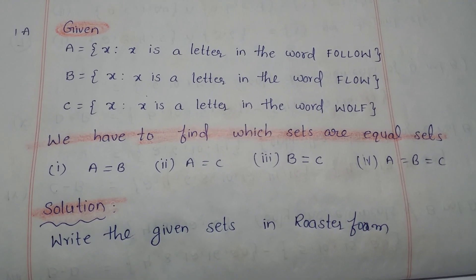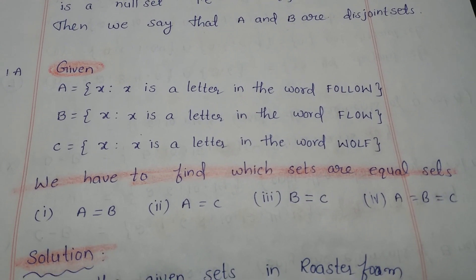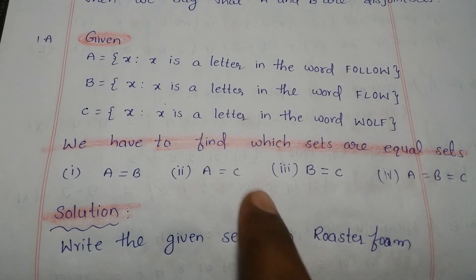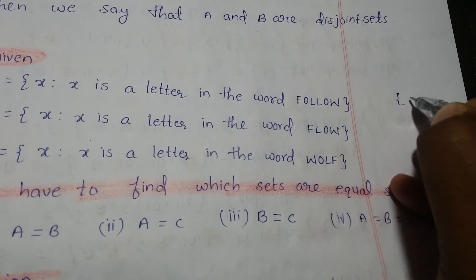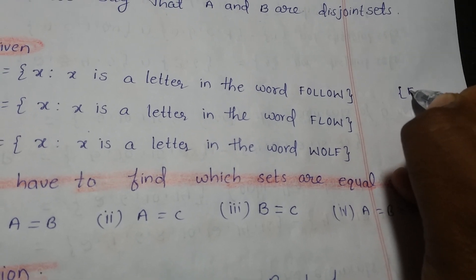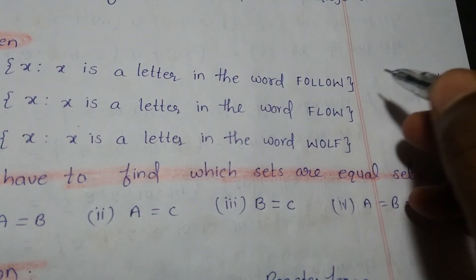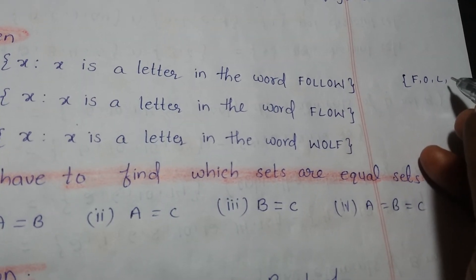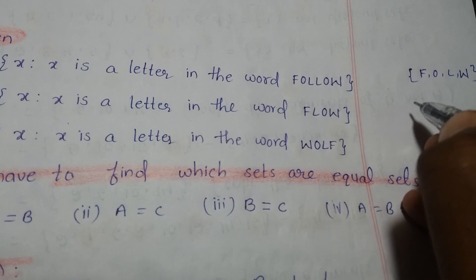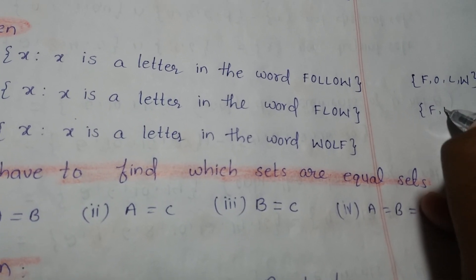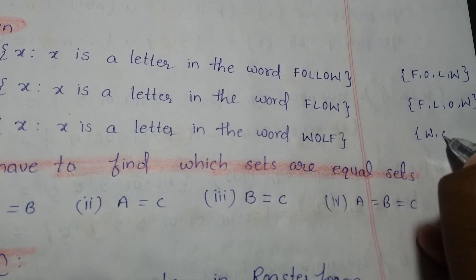All the sets are given in set-builder form, so first convert them into roster form. For the word 'follow,' write each letter separated by a comma: F, then O, then L — the second L is repeated so we skip it — then O is repeated so we skip it, then W. So the roster form is F, O, L, W. Similarly, 'flow' gives F, L, O, W and 'wolf' gives W, O, L, F.